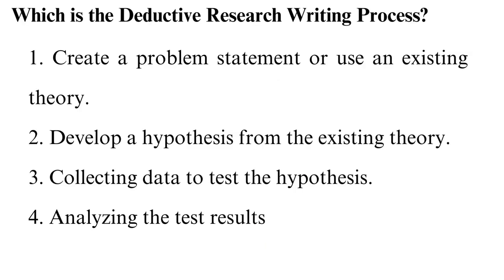The deductive research writing process should always start with a theory and then test it. The four stages are: first, create a problem statement or use an existing theory — e.g., domesticated dogs have fleas. Second, develop a hypothesis from the existing theory — e.g., all domesticated dogs in my flat have fleas. Third, collect data to test the hypothesis — e.g., test the dogs in your apartment for fleas. Fourth, analyze the test results — e.g., 10 out of 40 dogs didn't have fleas.